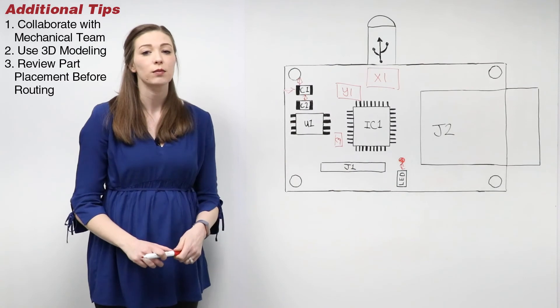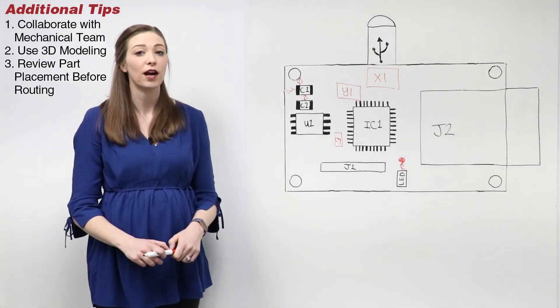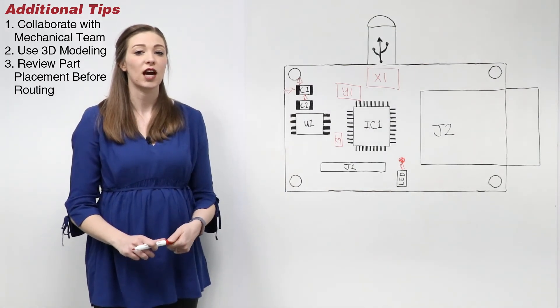Three, have your part placement reviewed by the mechanical and assembly engineers before moving on to routing. Checking the part placement early in the design process can save time when routing.